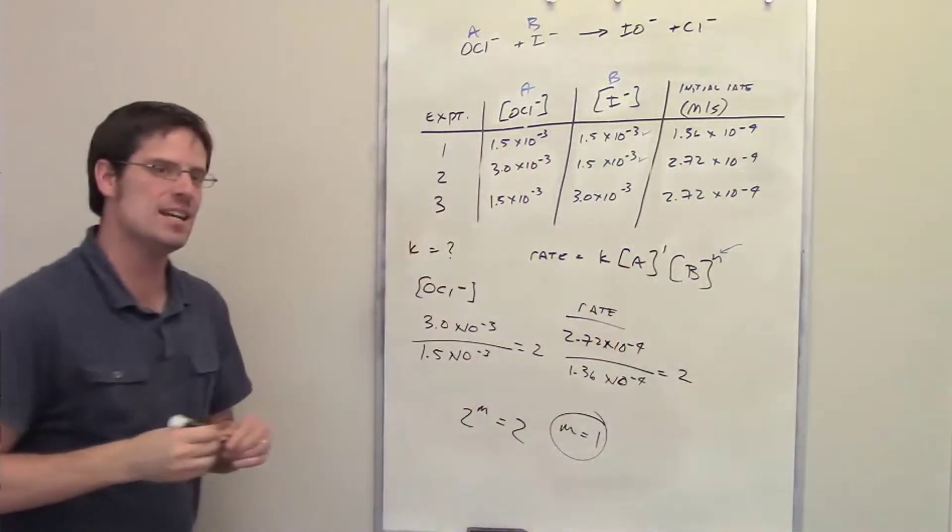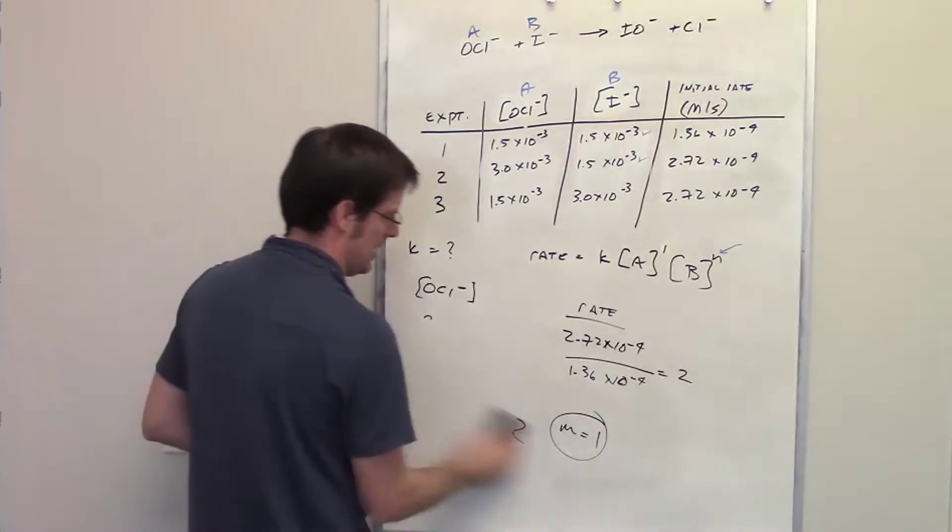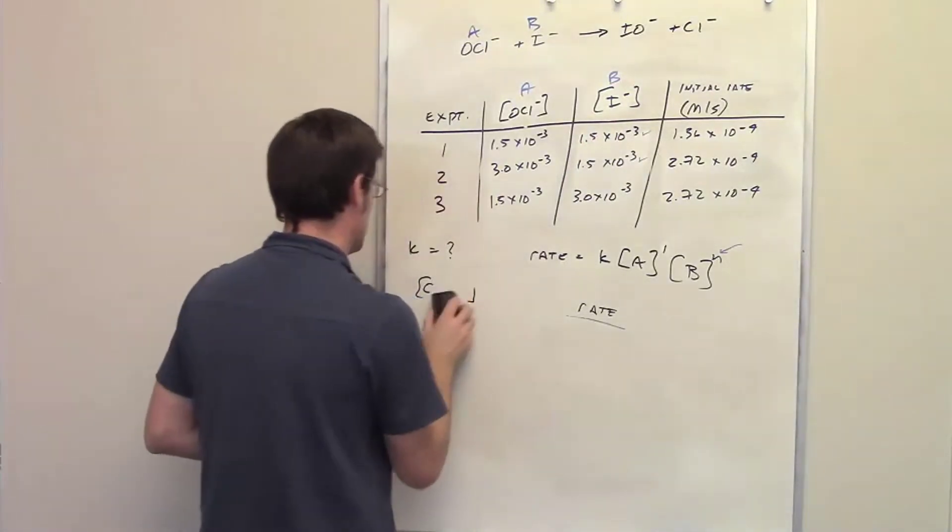How do I determine what n is? I do the exact same process, except I do it for component B, the iodide. So I'm going to go ahead and erase this now. And we'll take a look at the iodide.